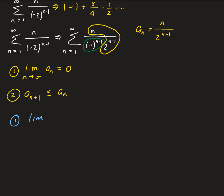We're going to have the limit as n goes to infinity of n over 2 to the n minus 1. Doing a direct substitution, as n goes to infinity the numerator goes to infinity, and 2 to the n minus 1 also approaches infinity, so we need to apply L'Hôpital's rule here.